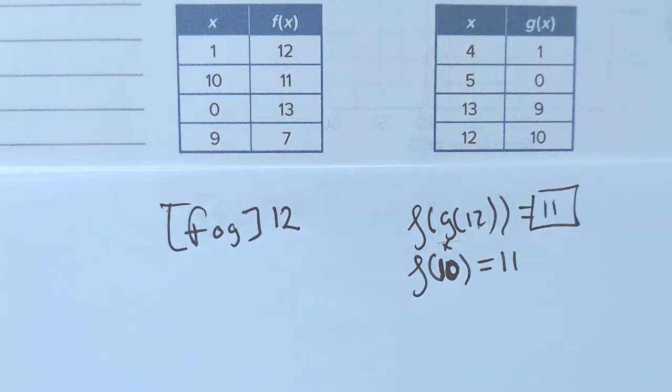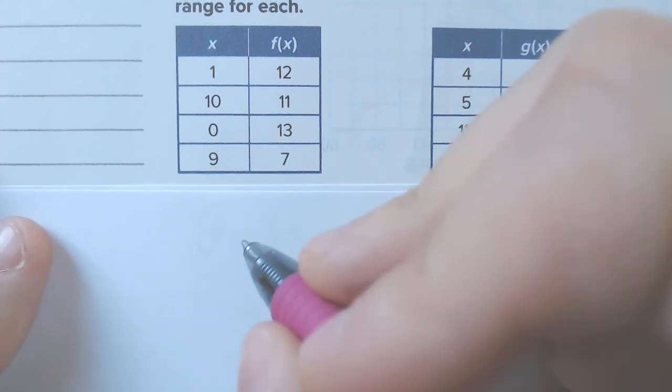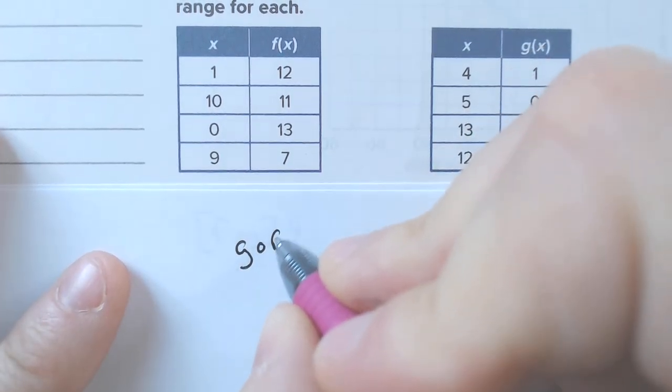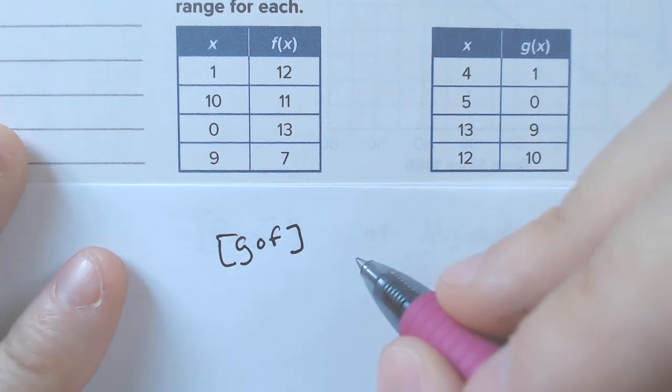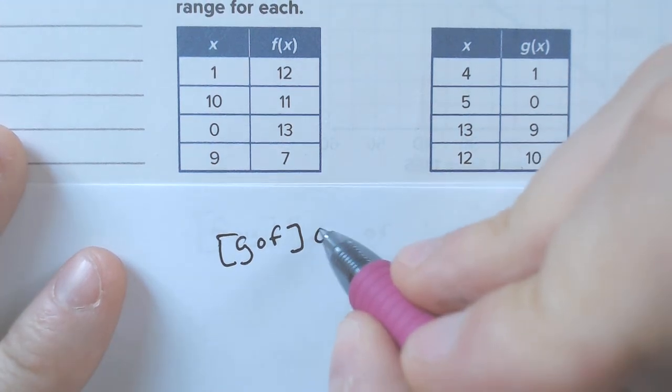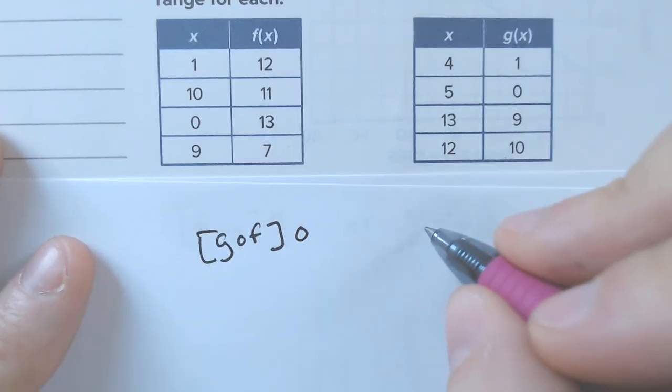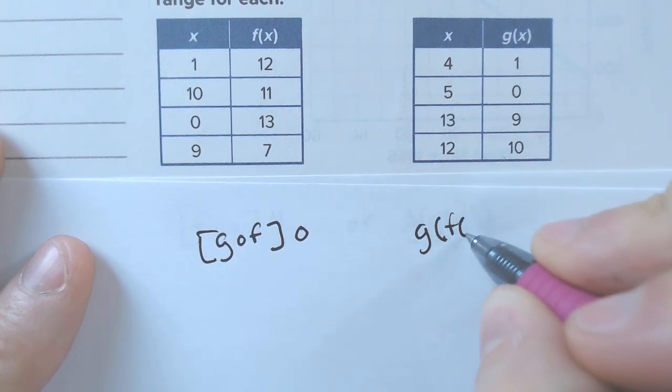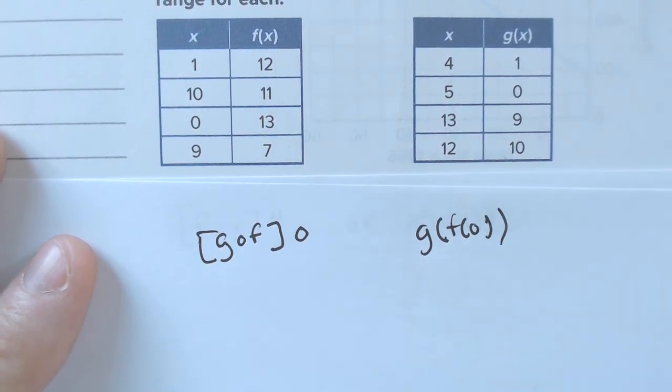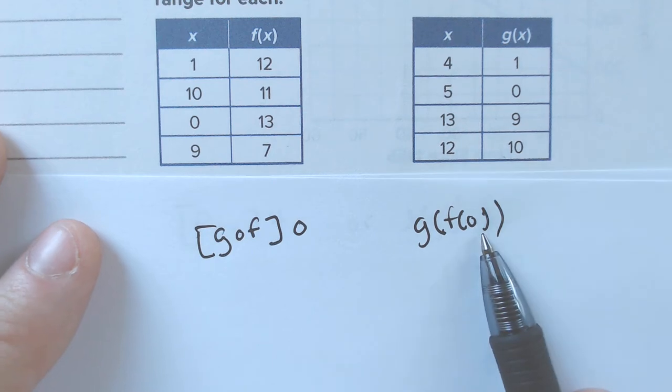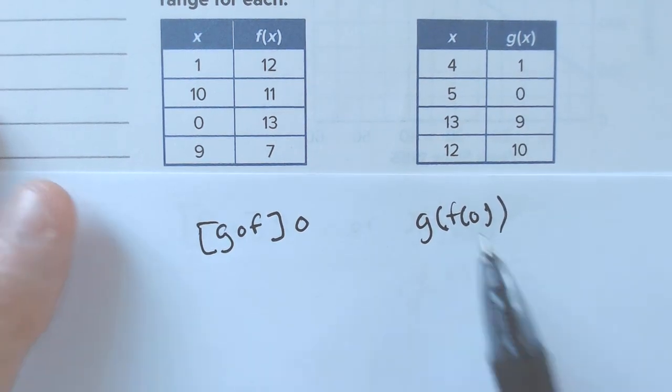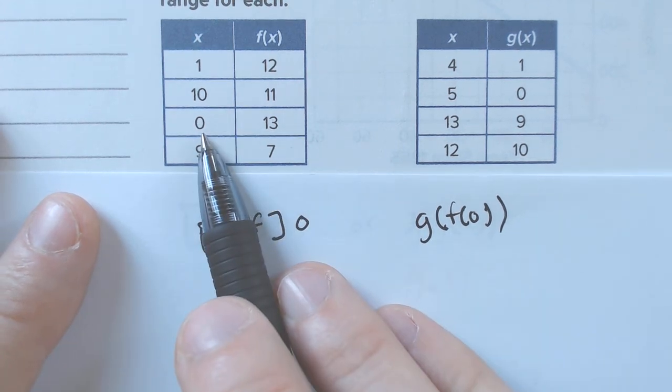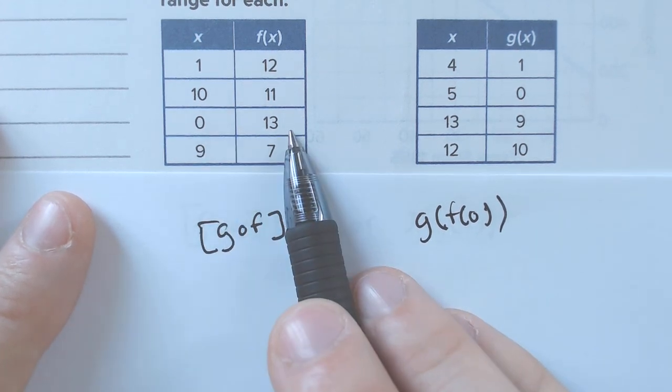One more. Let's do g of f of 0, which is the same thing as saying gof of 0, which means that we plug 0 not into g, but into f first, because you got to work from the inside out. So, I plug 0 into f of x, that would give me 13.